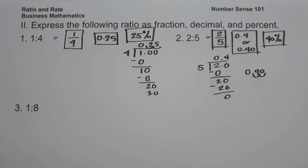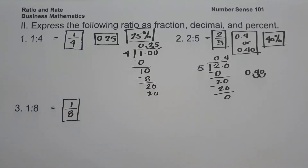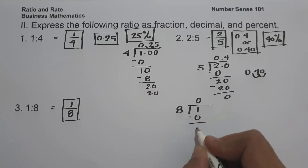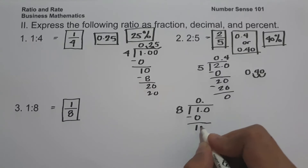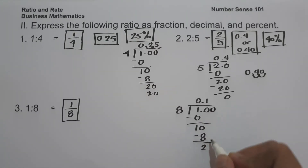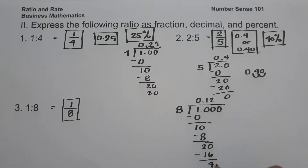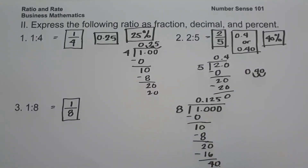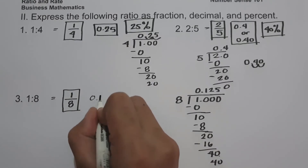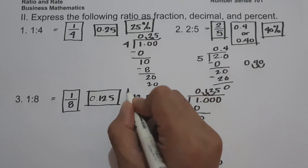On example number 3, we have 1 is to 8. In fraction form, that is 1 over 8. To write it as a decimal, we divide 1 by 8. Working through the long division: 10 divided by 8 is 1, 20 divided by 8 is 2, and 40 divided by 8 is 5. So 1 is to 8 in decimal is 0.125. To write this as a percent, we move two decimal places to the right, giving us 12.5 percent.